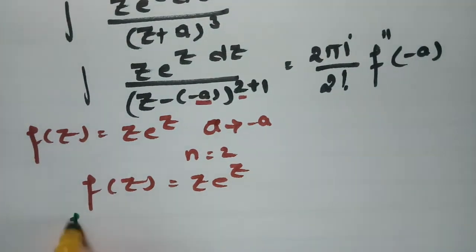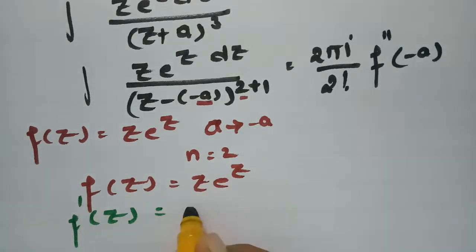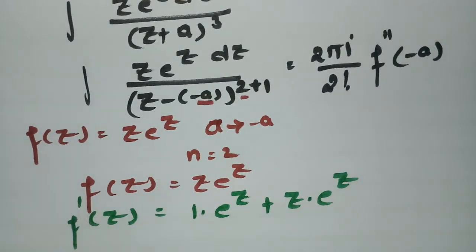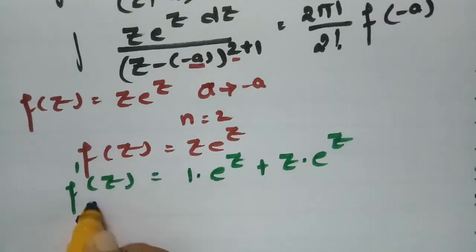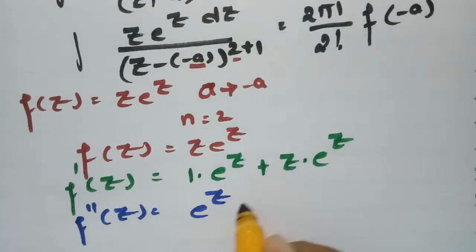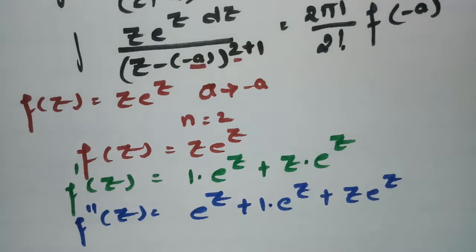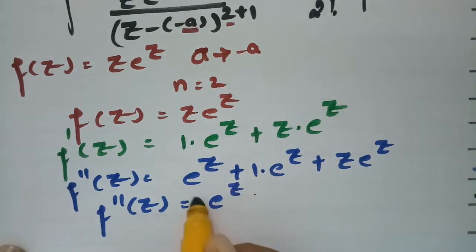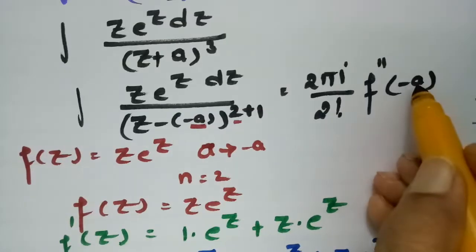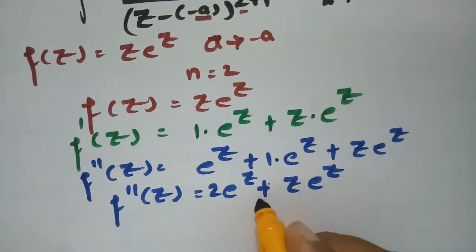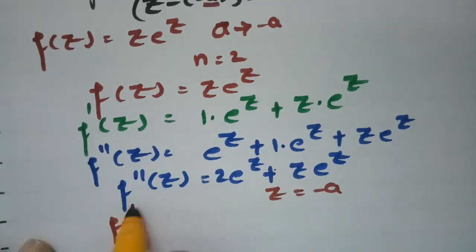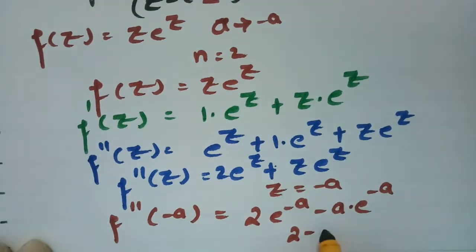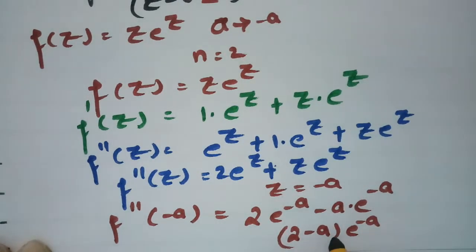Computing the first derivative using the product rule: f'(z) = e^z + ze^z. For the second derivative: f''(z) = e^z + e^z + ze^z = 2e^z + ze^z. Substituting z = -a: f''(-a) = 2e^(-a) + (-a)e^(-a) = e^(-a)(2 - a).